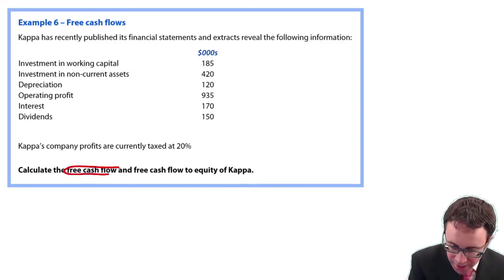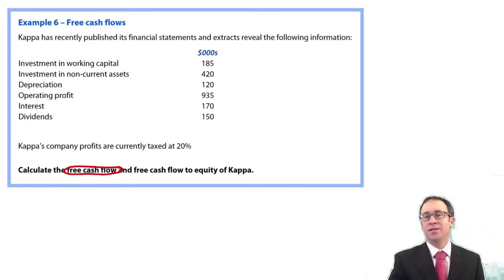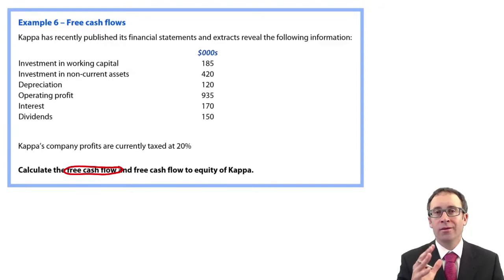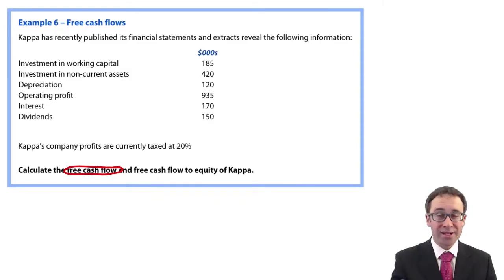So remember, that's the cash flows available to the debt and equity holders. So we adjust your operating profit, adjust for non-cash items, adjust for any investments you're making in non-current assets, adjust for any changes in working capital, and any tax payments that we had.